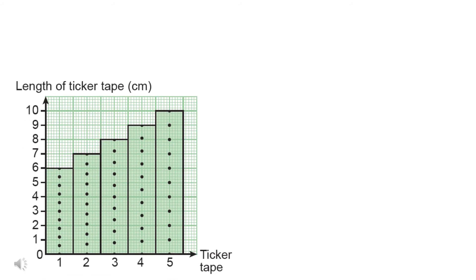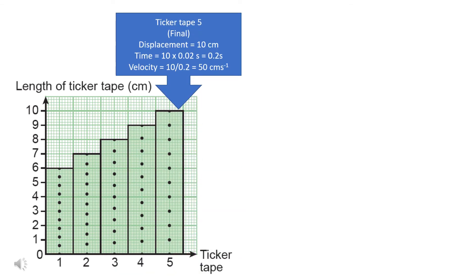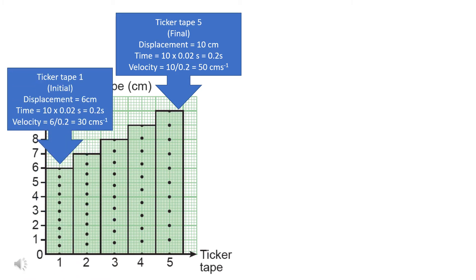From this ticker tape, we can also determine the acceleration of the trolley. The acceleration is final velocity minus initial velocity, divided by the total time. The final velocity is taken from the last ticker tape, that is ticker tape 5. Displacement is 10 cm and the time is 0.2 seconds, so the velocity is 50 cm per second. The initial velocity is calculated from the first strip: the displacement is 6 cm and the time is 0.2 seconds, giving a velocity of 30 cm per second.